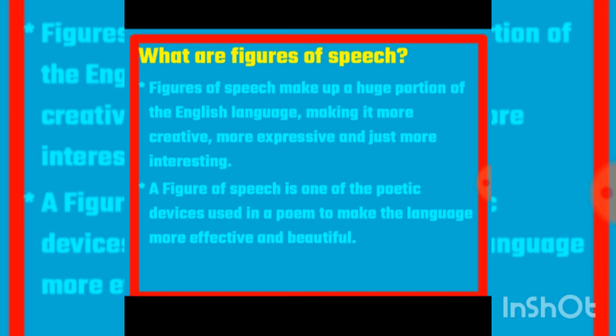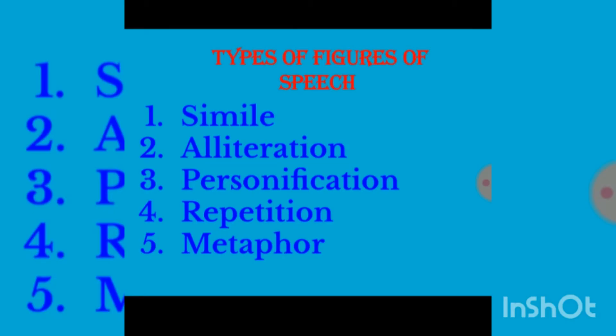For example, when we read a story, there are many sentences — some are repeated, some are compared with objects. We see this even in the prose part. That's why we use figures of speech. A figure of speech is one of the poetic devices used in a poem to make the language more effective and beautiful. Now let us see the types of figures of speech. The first one is simile.